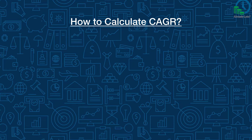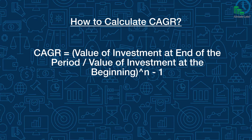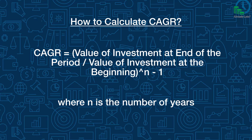You can calculate CAGR using a simple formula: value of investment at the end of the period, divided by your invested value, to the power of 1 divided by n, minus 1. Where n is the time period expressed in number of years.